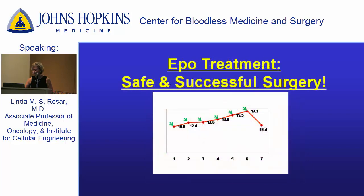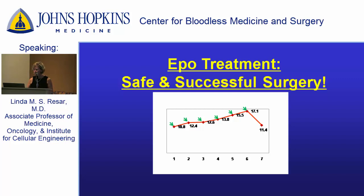I'd like to share a real success story of one of our patients who's actually here today, who received EPO and got through surgery safely and very successfully — in addition to Tammy, who you've heard about. When we met our patient, hemoglobin was a little bit on the low side — not necessarily significant anemia, but for a patient going on bypass and needing heart surgery, a little bit lower than we'd like. We treated our patient with both iron and EPO, and got to a very nice comfortable hemoglobin that was enough to get our patient safely through surgery.